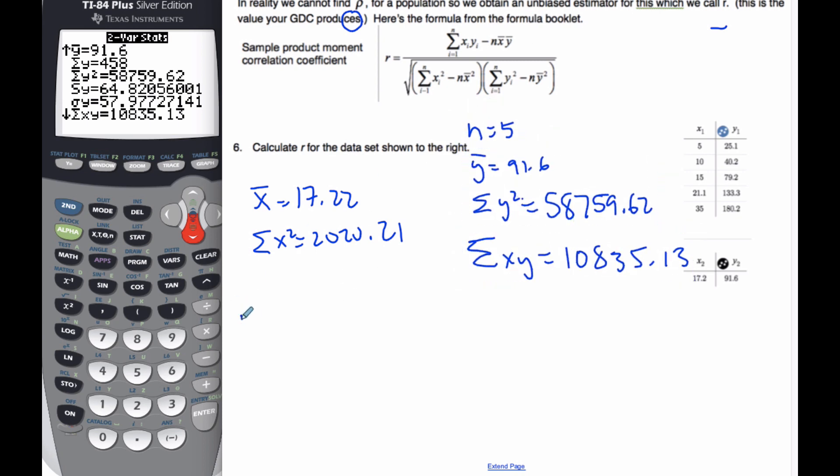So r will be 10,835.13 minus 5 times x bar, y bar, 17.22 times 91.6. And this is going to be divided by the x squared sum, 20.21, minus 5 times 17.22 squared,